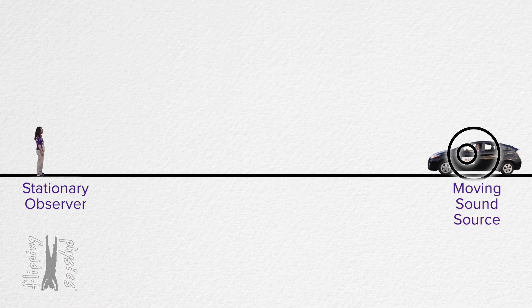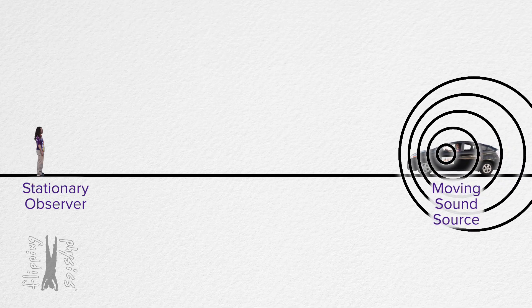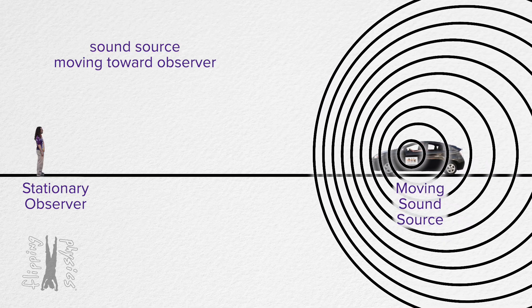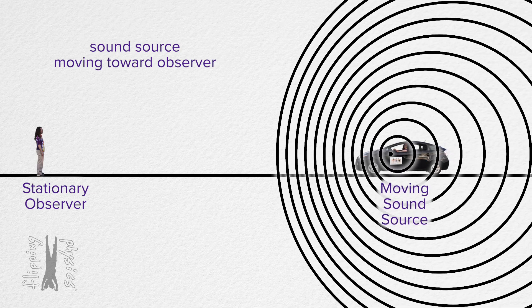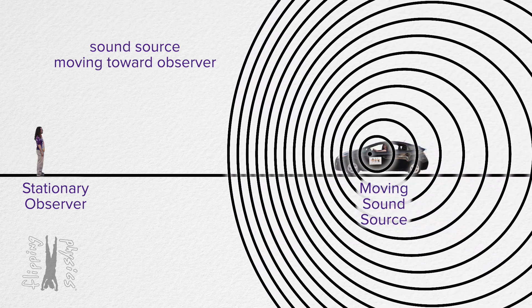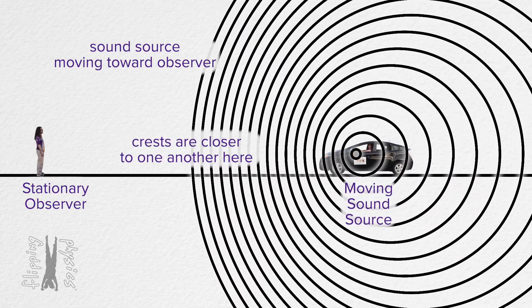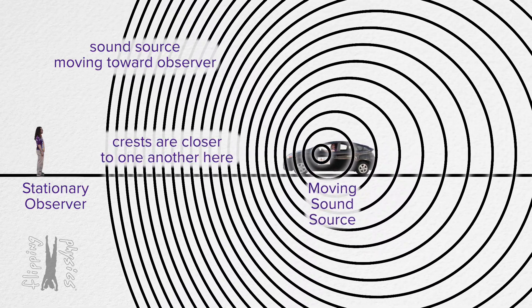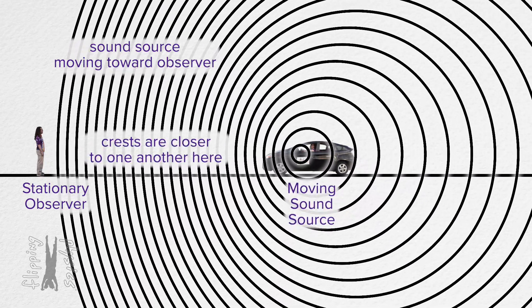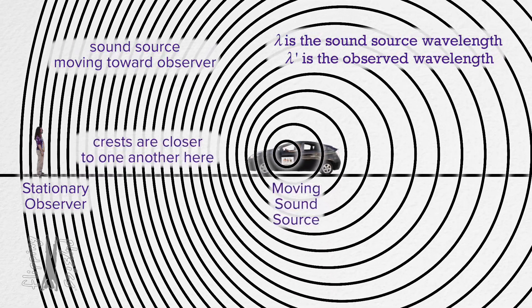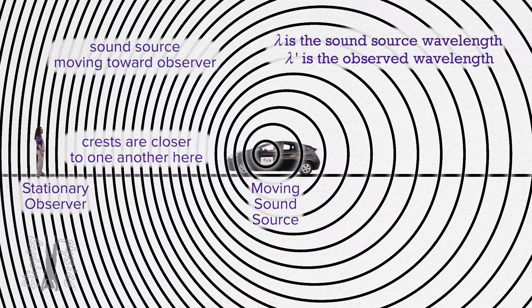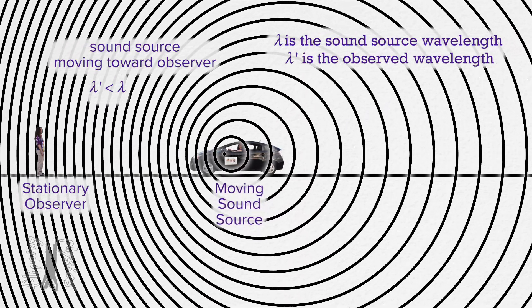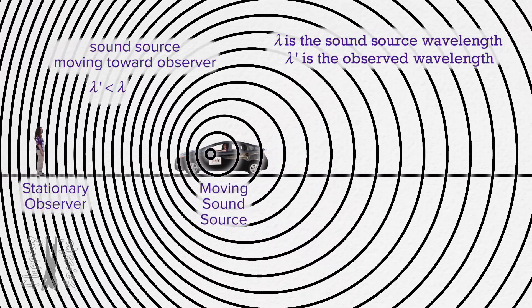Now let's add a human to our animation. Notice the observer is currently located such that the car, the source of the sound, is coming towards the observer. What do you notice about the distance between the spheres going towards the observer? On the side of the car where the person is, the circles are closer to one another. The circles represent crests in the wave, and the distance between two crests is the wavelength. That means the wavelength of the sound wave which the observer hears when the car is moving toward them is less than the wavelength of the original sound.